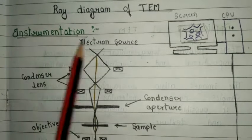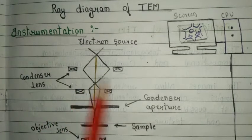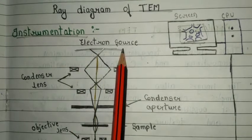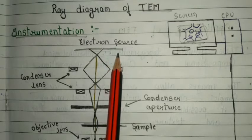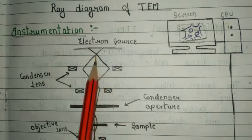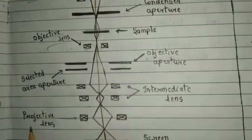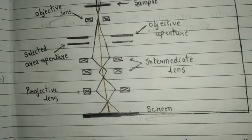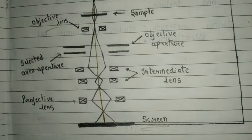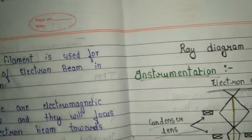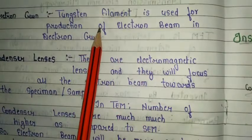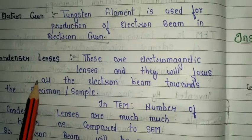The instrumentation of TEM includes a ray diagram with four key parts: electron source, condenser lens, objective lens, projector lens, and the screen. For the electron source, we use an electron gun to produce the electron beam, with a tungsten filament used to generate the electrons.